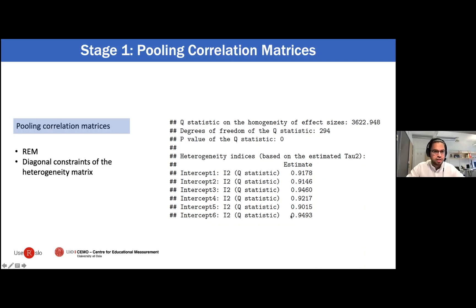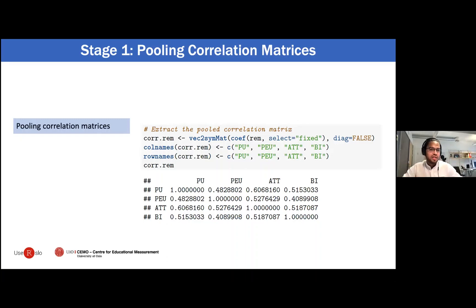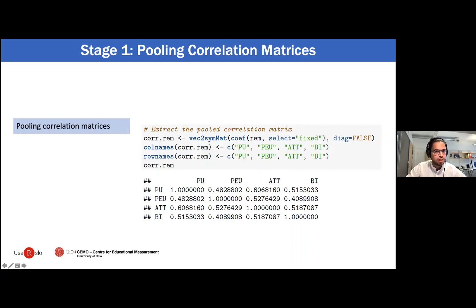That threshold would change from field to field, but in this particular example we observe that there is considerable heterogeneity in the correlations. So it might actually be useful to perform some moderator analysis to try to explain this variance. We can also extract the average correlation matrix from stage one to have a better overview — you don't really need to do this for the estimation of the MASEM model, but it's a very nice way to summarize the information.